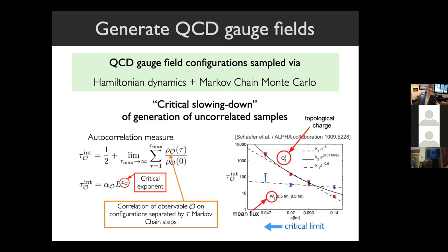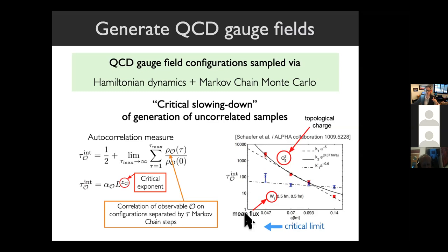Here's a figure showing what this critical slowing down looks like. The integrated autocorrelation time — a measure of how correlated the configurations in your chain are — is shown for various observables as we move towards the critical limit. You can see that this topological charge and other physical quantities have an autocorrelation time that diverges exponentially badly as you move towards the critical limit, meaning your calculations diverge in cost exponentially in that limit. This is the problem my group has been working on addressing with machine learning.